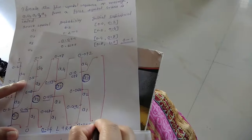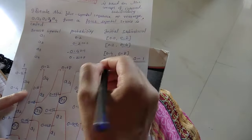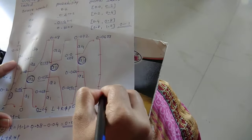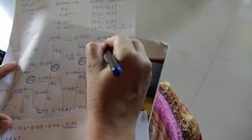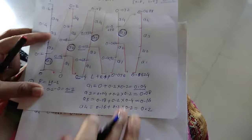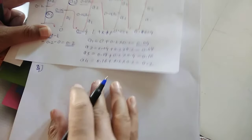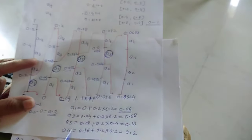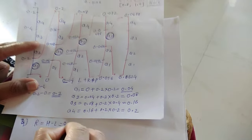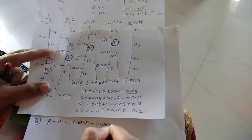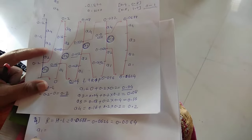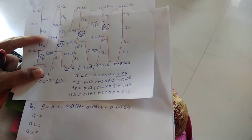The lowest value is 0.0624 and highest value is 0.0688 for this a3 interval. Again divide into four sub-intervals for a1, a2, a3, and a4 with the same formula. This is the fourth iteration. r = h minus l = 0.0688 minus 0.0624 = 0.0064.